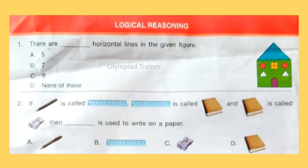Question 2: If pen is called ruler, ruler is called book and book is called sharpener, then dash is used to write on a paper. Answer is Option B, Ruler.